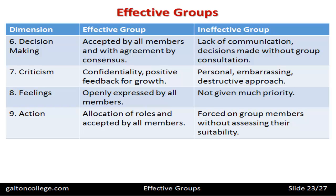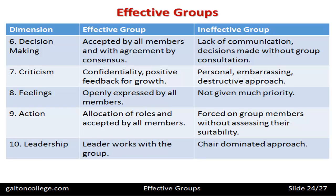There should always be an attempt to match skills and competencies with task requirements. For leadership, an effective group's leader works with the group — they are involved, available to be consulted, and seek opinions from the group, making leadership more participative. In an ineffective group, the chairperson dominates everything, just issuing commands and orders, causing alienation so members don't feel able to speak to or communicate with the leader.